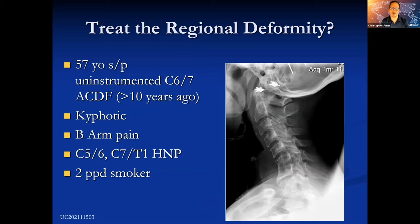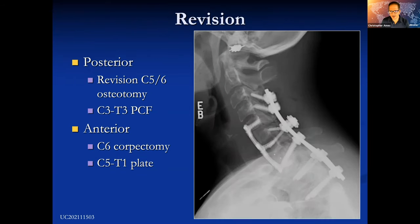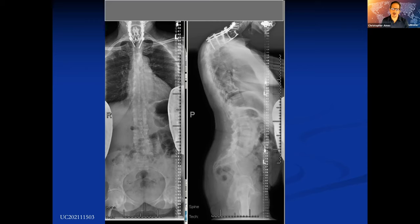Surgeons have often been inclined to treat the regional deformity. Like this patient who had a segmental kyphosis — and if you carefully study the films, you can see there's some scalloping of C1, indicating a long-standing potentially subjacent deformity. This patient underwent a regional correction many years ago, with early failure, then a revision, and again early failure. What was really the driving issue all along was an upper thoracic kyphosis with compensation at the occipital cervical junction, and this patient ended up needing a three-column osteotomy to correct that.